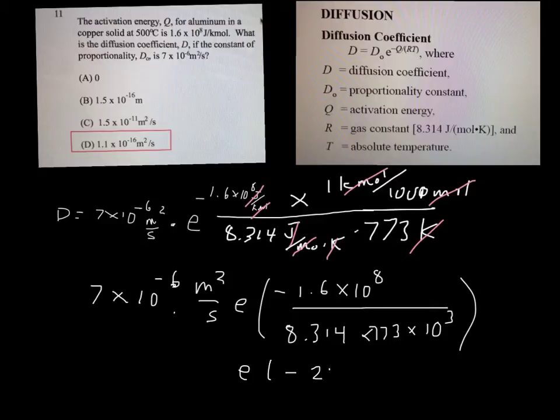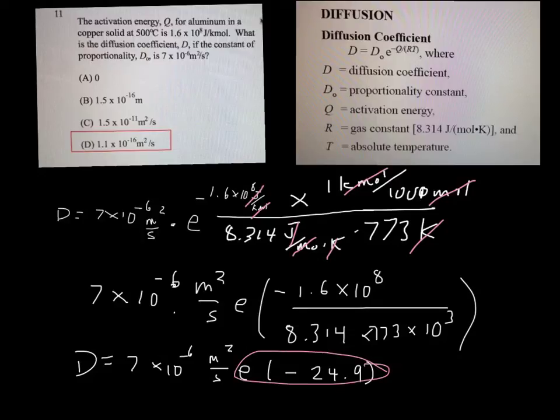So what I get is e to the minus 24.9, and this is 7 times 10⁻⁶ with the same units meter squared per second equals D.